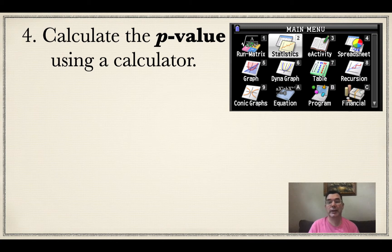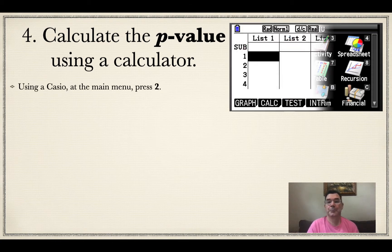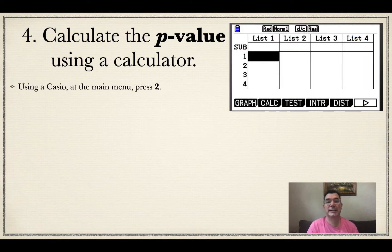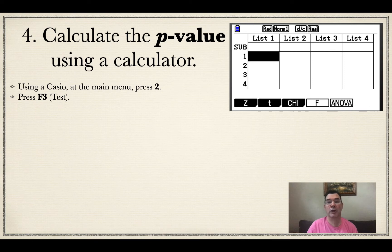In my calculator, I go to menu 2, which is statistics. Then there is where I get my table of values, but I don't really need to input a table of values because I already have all of my data. So I'm going to press F3, which is test. There at the bottom of the screen, you see all the possible tests. This is the Student t-test, so I will press F2, which is t.